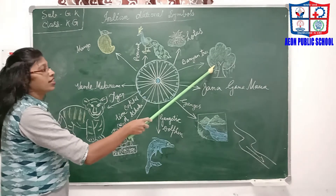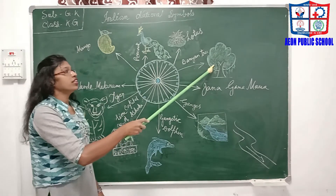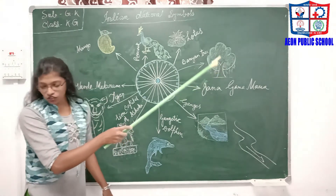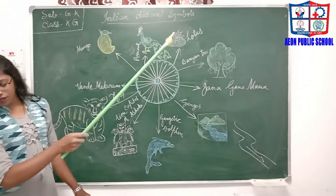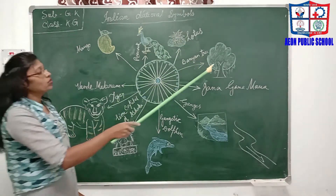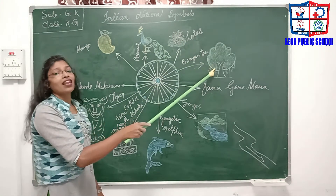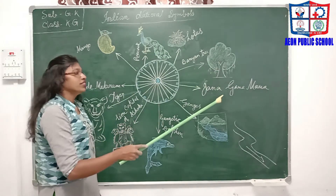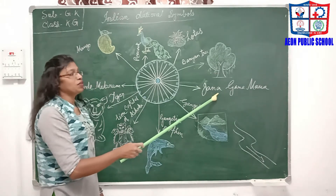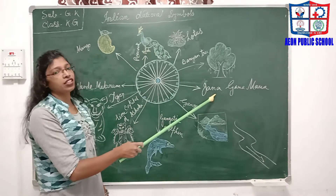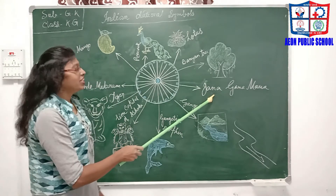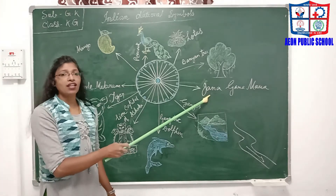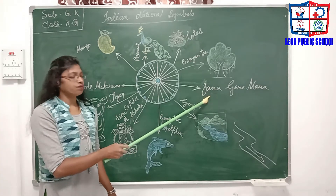Then the National Tree is the Banyan Tree. It shows eternal life. Our National Anthem is Jana Gana Mana, which was written by Rabindranath Tagore.